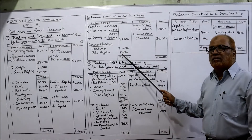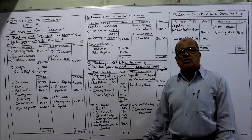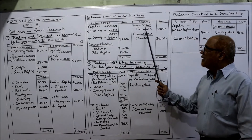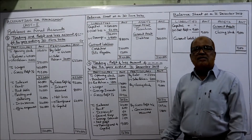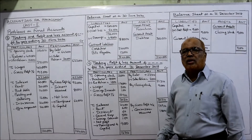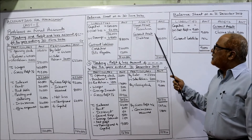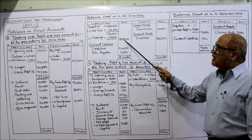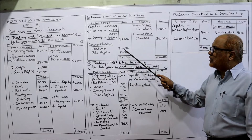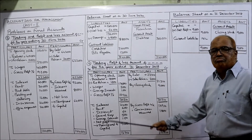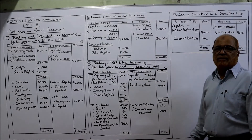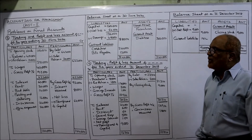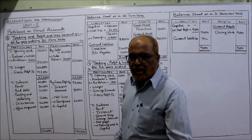Asset side: fixed asset — only one fixed asset is furniture. Current assets — only one item, debtors. Total: forty thousand plus three lakh equals three lakh forty thousand. And eighty-eight thousand plus two lakh forty thousand plus twelve thousand — we get three lakh forty thousand. Balance sheet tallied. This is the end of problem number five. Now I'm going to explain problem number six.